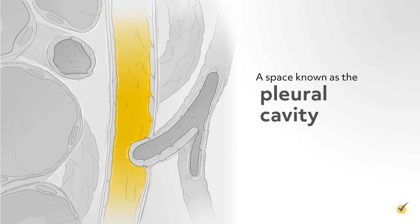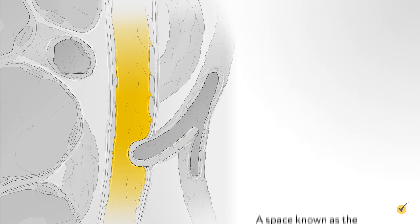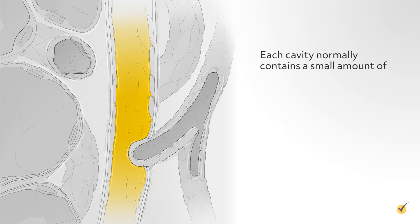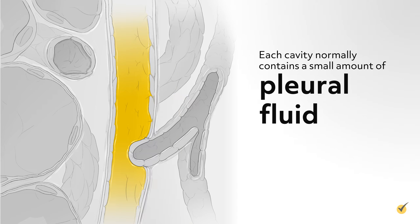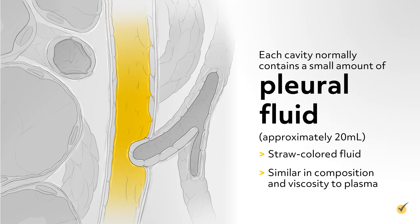A space known as the pleural cavity, 10 to 20 micrometers wide, is created between the layers of the pleura. Each cavity normally contains a small amount of pleural fluid, approximately 20 milliliters, which is a clear, straw-colored fluid similar in composition and viscosity to plasma.